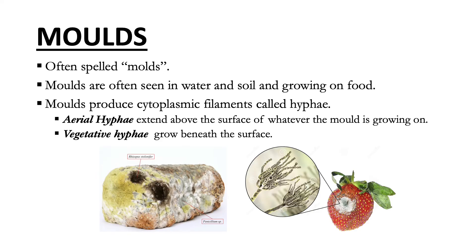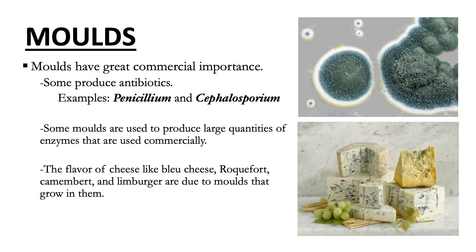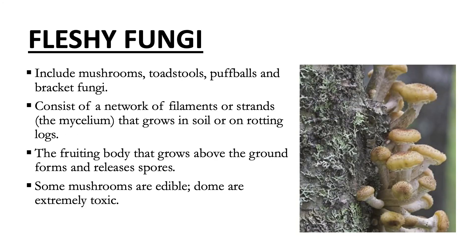Another category of fungi is molds, often seen in water, soil, and on food. They grow in the form of cytoplasmic filaments or hyphae that make up the mycelium. Some hyphae are called aerial hyphae, extending above the surface of whatever the mold is growing on, and some are called vegetative hyphae, which are beneath the surface. Mushrooms are a class of true fungi consisting of a network of filaments that grow into the soil or a rotting log, forming a fruiting body where they release spores.